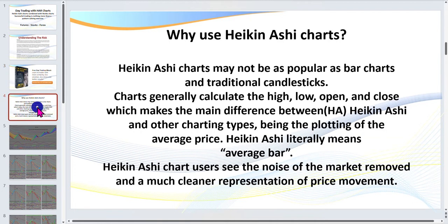Why use Heiken Ashi charts? Heiken Ashi charts are great because they're really a trading methodology or system within themselves. A couple of challenges though: they are an average bar, meaning the bars are calculated on the last two bars, so the price you see plotting at the time is not always the actual price, which can be problematic. However, what they do is remove the noise from the market and give you a much cleaner representation of what's happening.